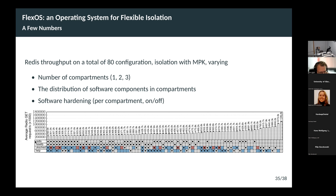The color in the boxes indicates which compartment the software components are placed in. For example, one configuration may have two compartments — white and blue — while another may have three — white, red, and blue. Dots, either black or transparent, indicate whether software hardening is enabled. We generate 80 configurations with variations of all these possibilities. We can see that we get a very wide trade-off space in terms of performance: at most more than a million requests per second, going down to about 300K. Generally, the more security features applied, the slower it gets.